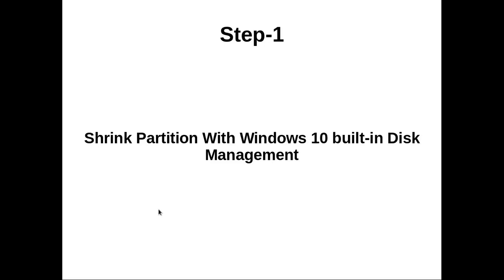Step 1: Partition setup. With Windows 10 built-in Disk Management, you have to create a separate partition to install Ubuntu. If there is no separate partition, you have to shrink the partition and create a separate partition to install Ubuntu.